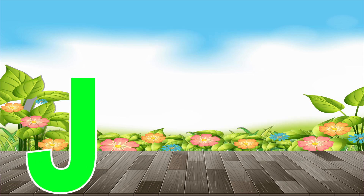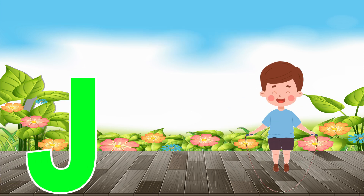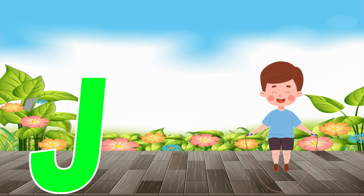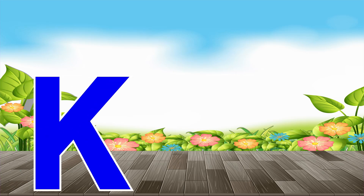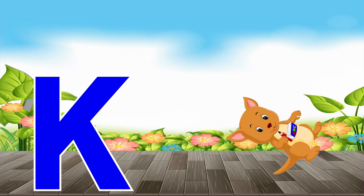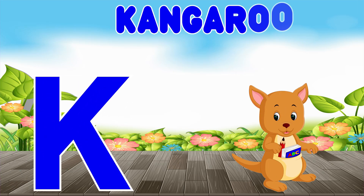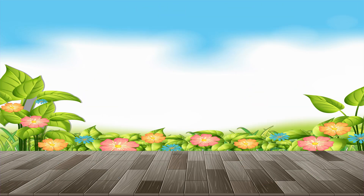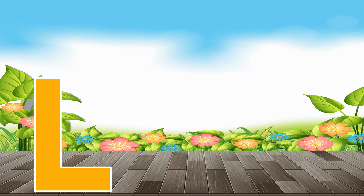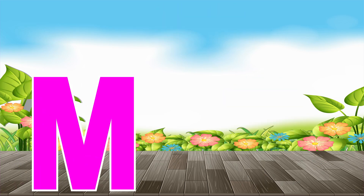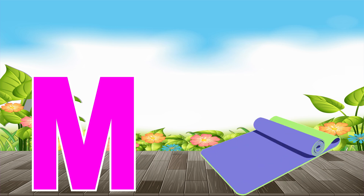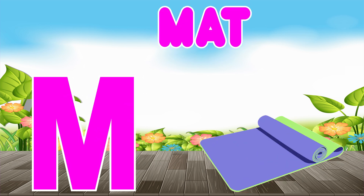J is for jump, j-j-jump. K is for kangaroo, k-k-kangaroo. L is for lion, l-l-lion. M is for mat, m-m-mat.